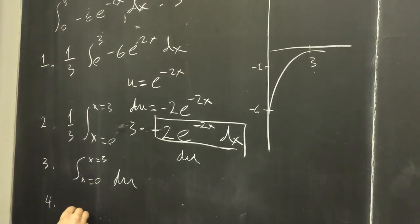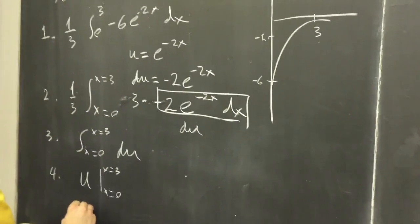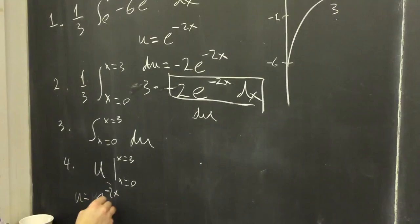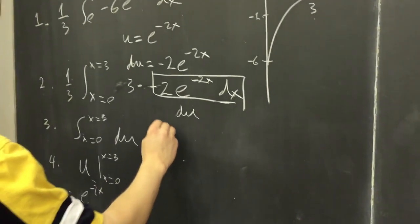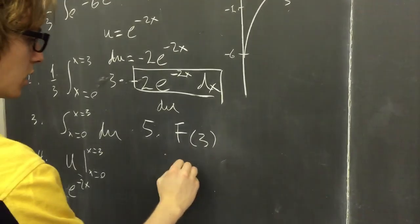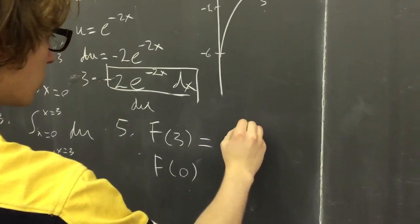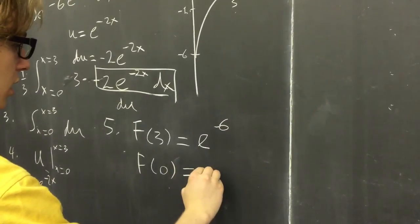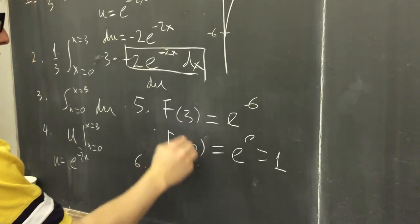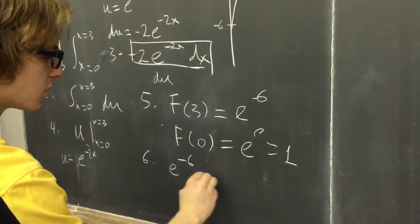So that will just be equal to u evaluated from x equals 0 to x equals 3. But our u equals e to the minus 2x, and this function is evaluated from 0 to 3. So we just plug in 3 and 0 for the function, and we have e to the minus 6, and we have e to the 0, which is 1. And our average value is f of 3 minus f of 0, and it's e to the minus 6 minus 1.